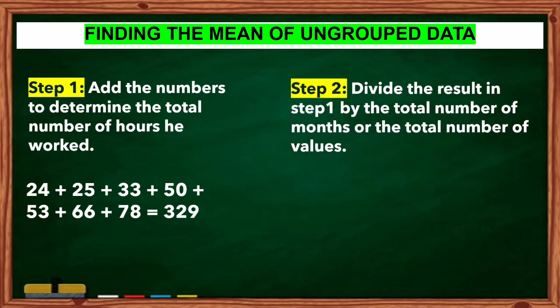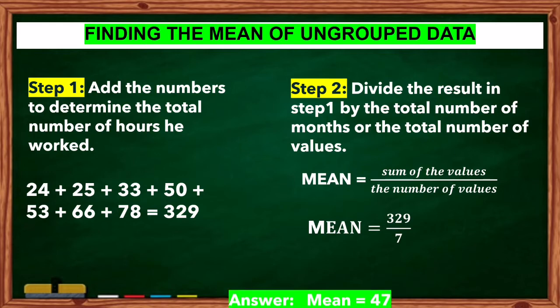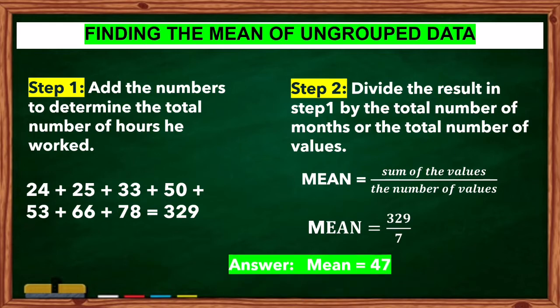Step 2: Divide the result in Step 1 by the total number of months or the total number of values. So, mean is equal to the sum of the values divided by the number of values. Mean is equal to 329 divided by 7. The answer is the mean is equal to 47.